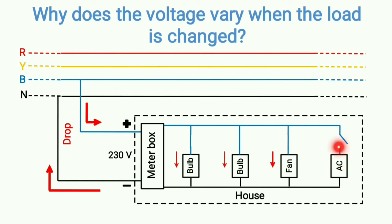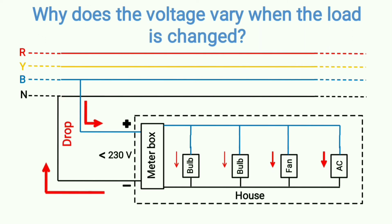There is an AC load whose switch is still off. The moment the switch is turned on — since an AC draws a huge amount of current with the largest power consumption among these loads — the current at the service main will also increase significantly. The drop will be much higher than the previous case because the AC draws a huge current, and accordingly the current in the service main increases. As I said, increased current means increased voltage drop in the service main.